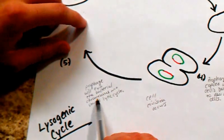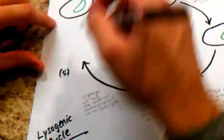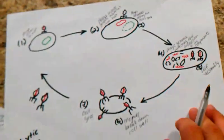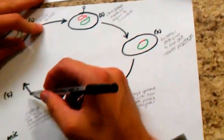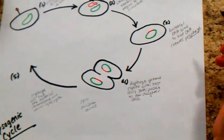Now, the prophage will then exit the bacterial chromosome, and it could start a new lytic cycle, or it could just restart another lysogenic cycle.